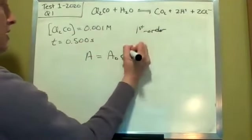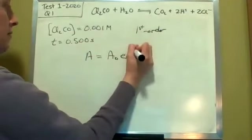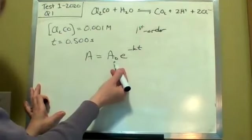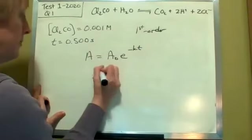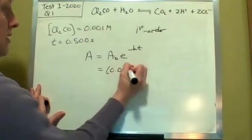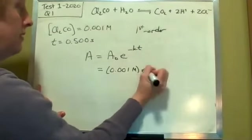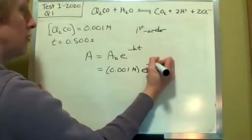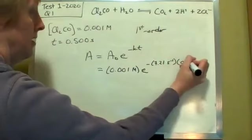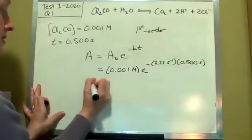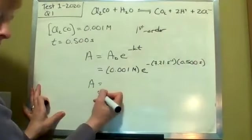So you can use our integrated rate equation. A equals A naught e to the minus KT. Where A is the concentration remaining in a reaction after a certain amount of time. A naught is the initial concentration. T is your time. And there's your rate constant. So we can substitute in here. You know A naught, 0.001 molar. And just make sure your units work out. So if you take 7.21 seconds to the minus one, 0.5 seconds,